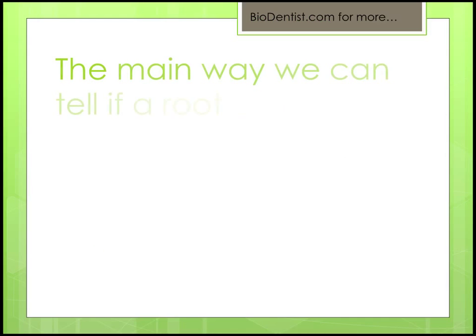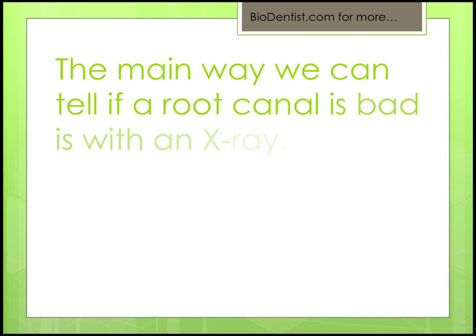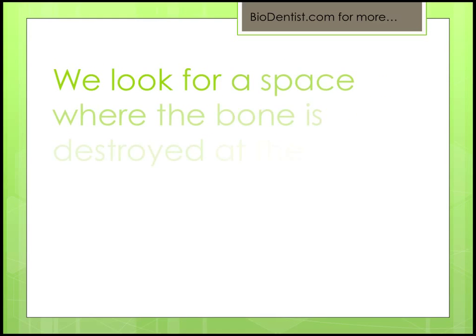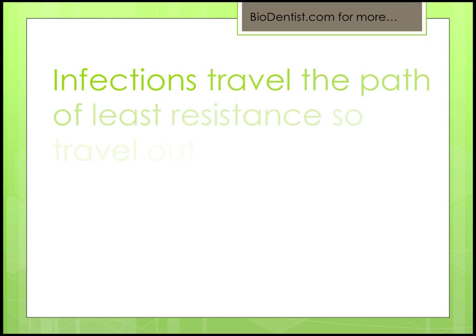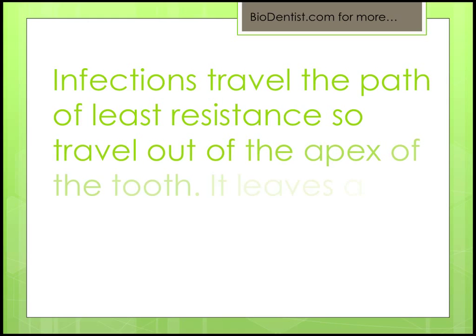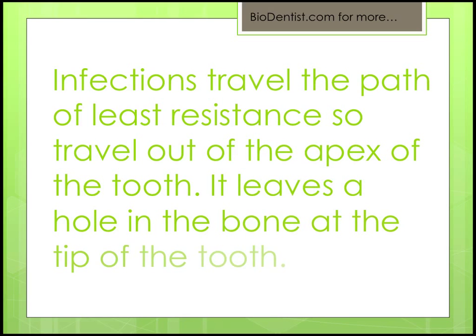The main way we can tell a root canal is bad is by use of an x-ray. We're looking for damage or a space where the bone has been destroyed at the apex — the very tip of the root of the tooth. Infections always travel a path of least resistance in the body, and out the very apex of the tooth is where most toxins will accumulate and express themselves. That's where you're going to find a pocket, a hole.